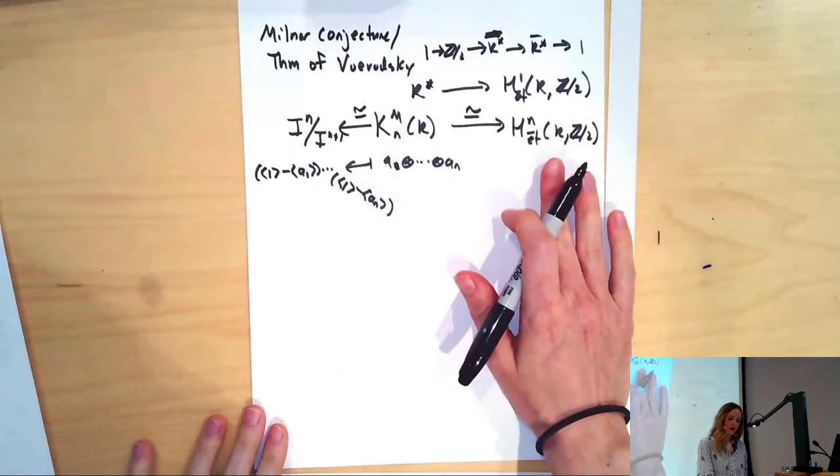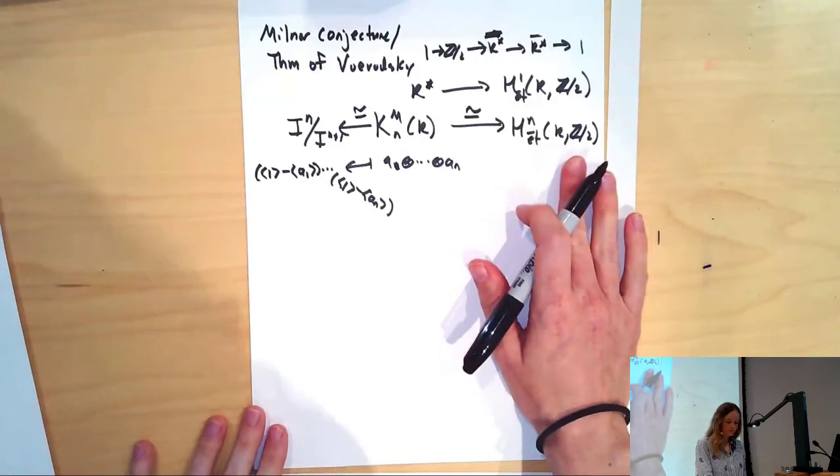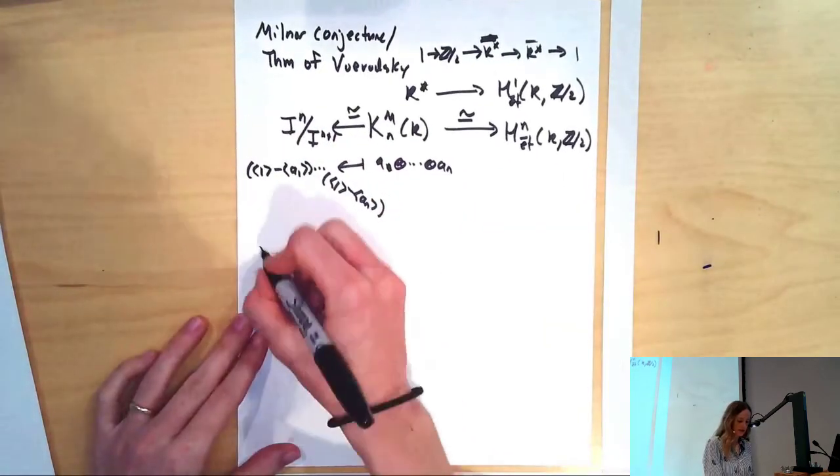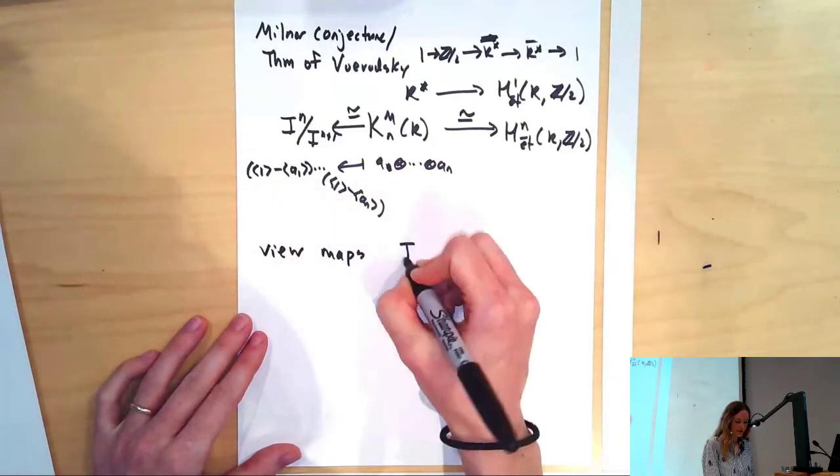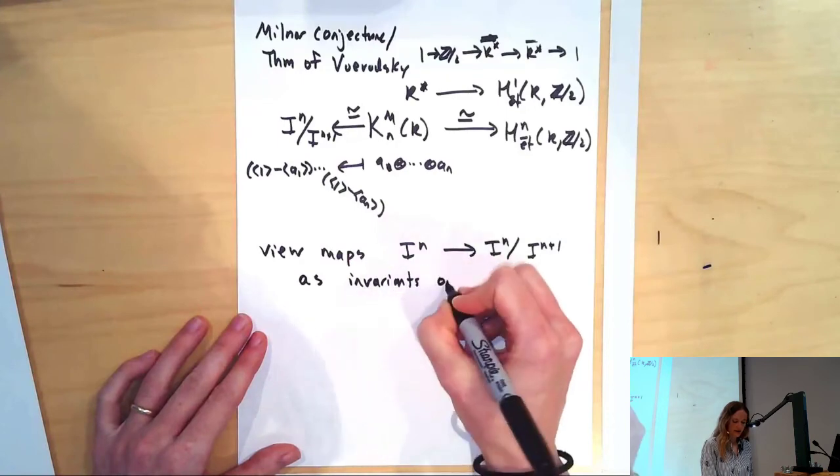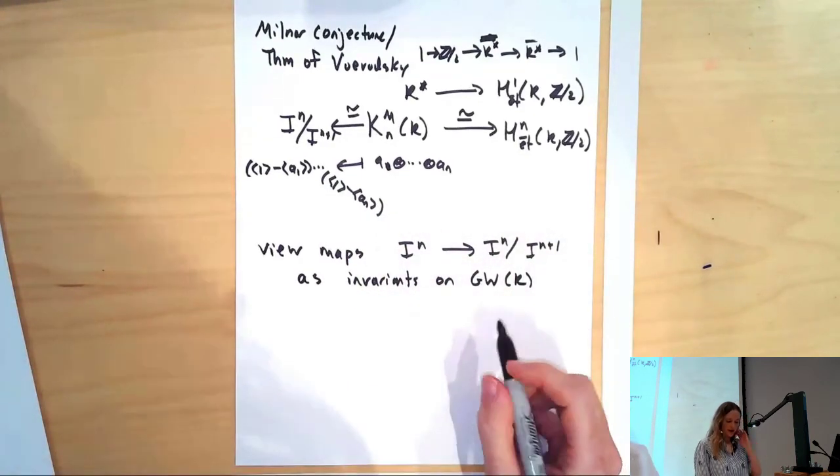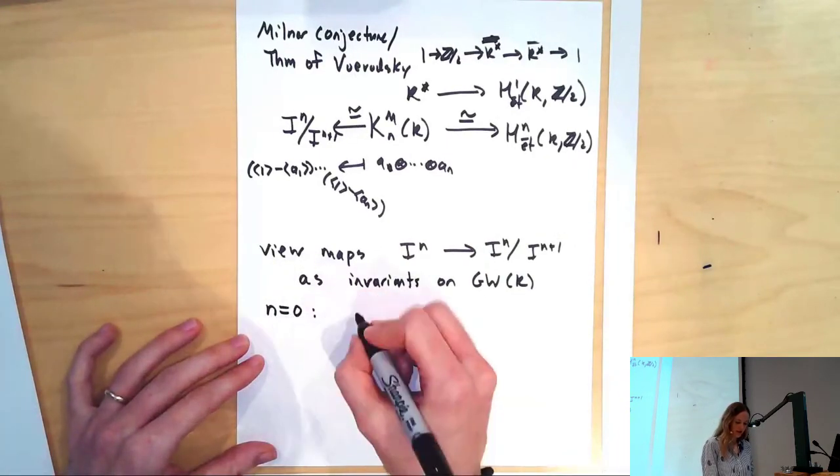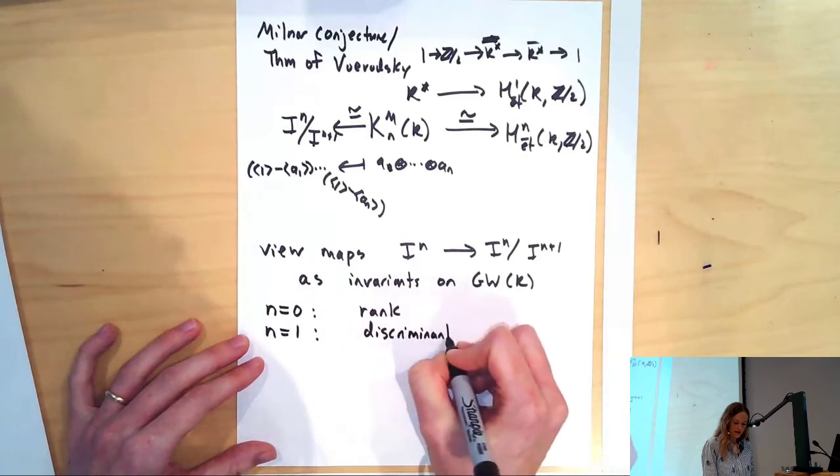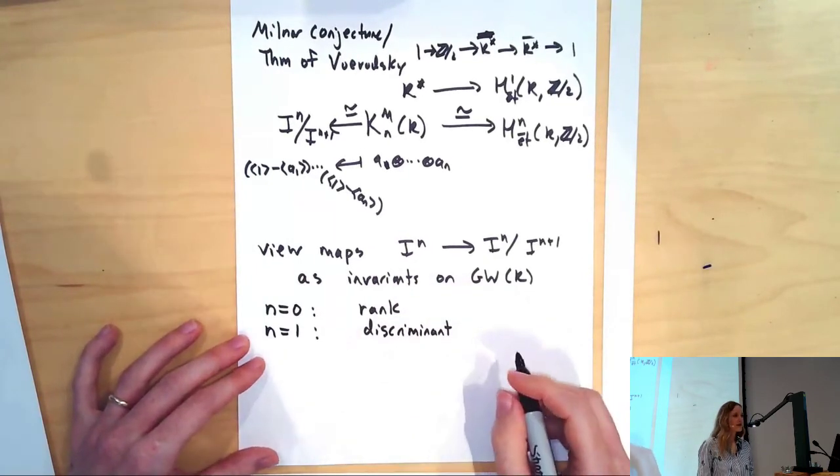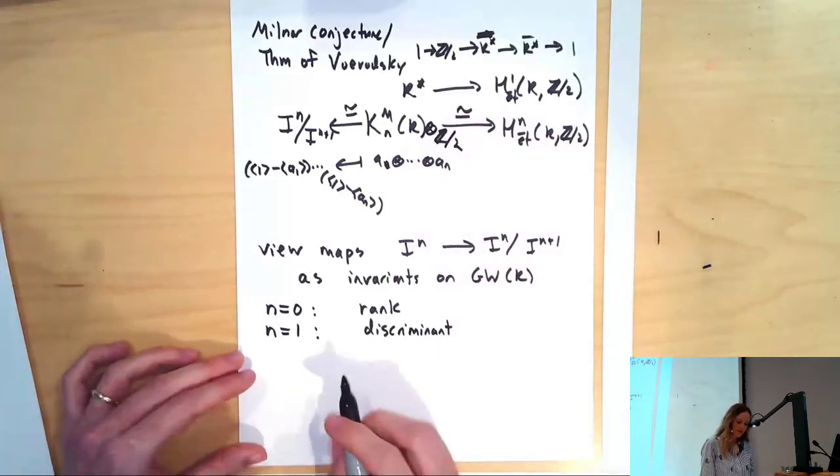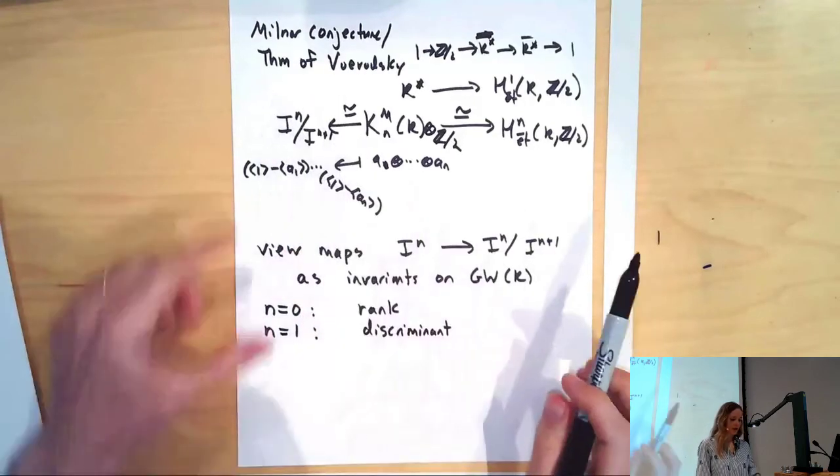We can view the maps Iⁿ → Iⁿ/I^(n+1) as invariants on the Grothendieck-Witt group. When n is 0, we get the rank. When n is 1, we get the discriminant. Technically this is only for n greater than 1, because I didn't use the Witt group.